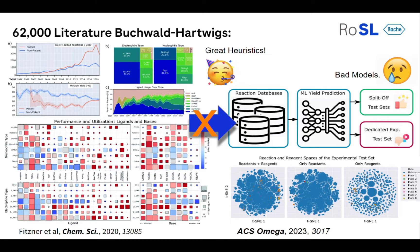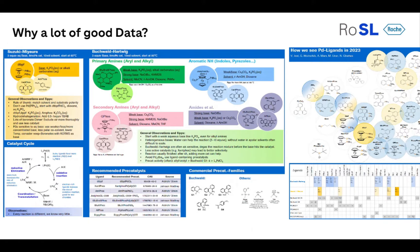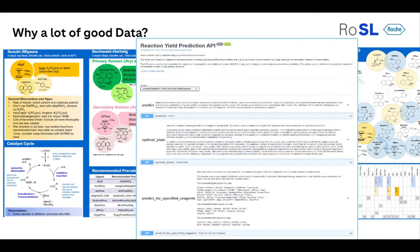How did we start with our data? We didn't have machine learning tools from the very beginning. We started with a cheat sheet — after about a year of running Buchwald-Hartwigs and Suzukis, we went back to our data and looked at which catalysts work well with which bases. Then, once you start generating enough data, you can start building machine learning models. Right now we have one API running for Buchwald-Hartwig and one in the pipeline for Suzuki prediction. These predictions run only on our data — a huge treasure you start to generate when you go down the road of HTE.